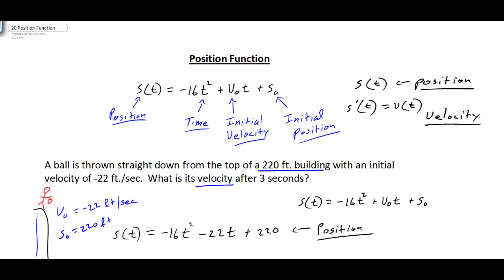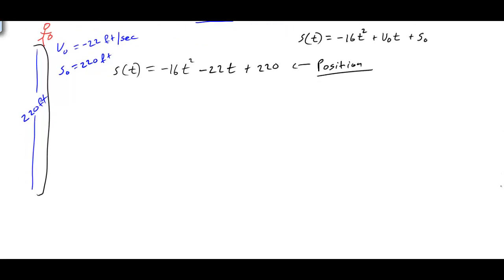That's a nice shortcut to find our velocity function. Taking S-prime of t, we differentiate: 2 times negative 16 gives us negative 32t, the derivative of negative 22t is simply negative 22, and the derivative of the constant 220 goes to zero. So this is our velocity function.